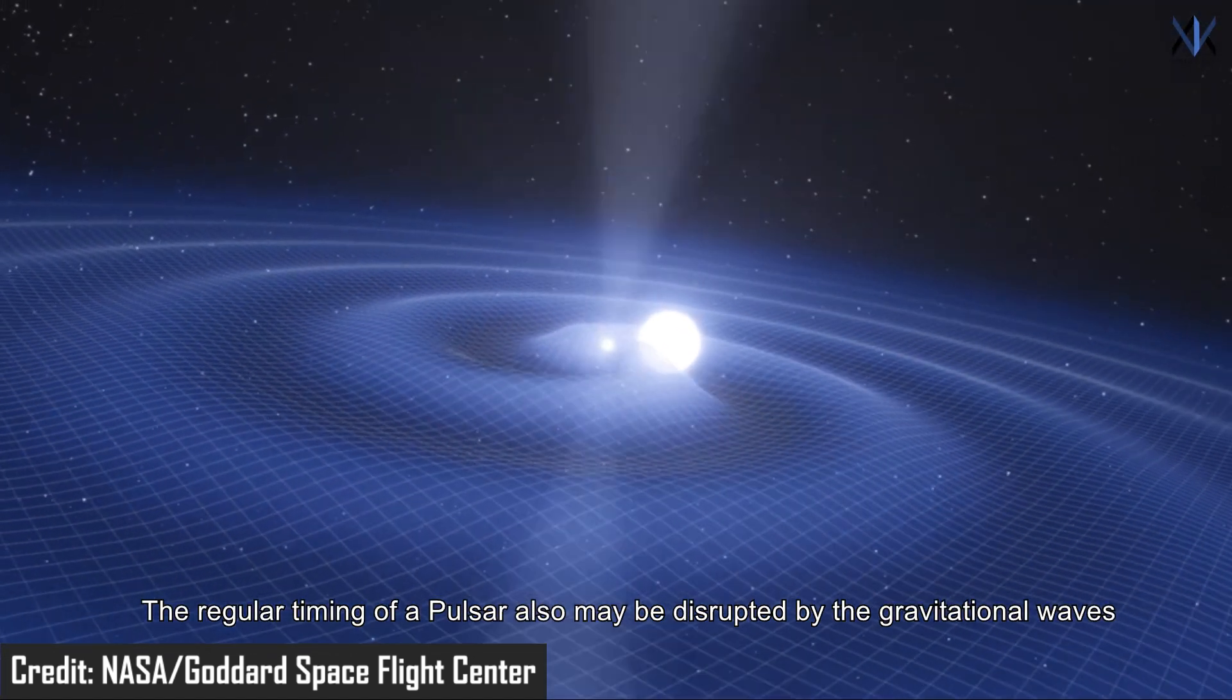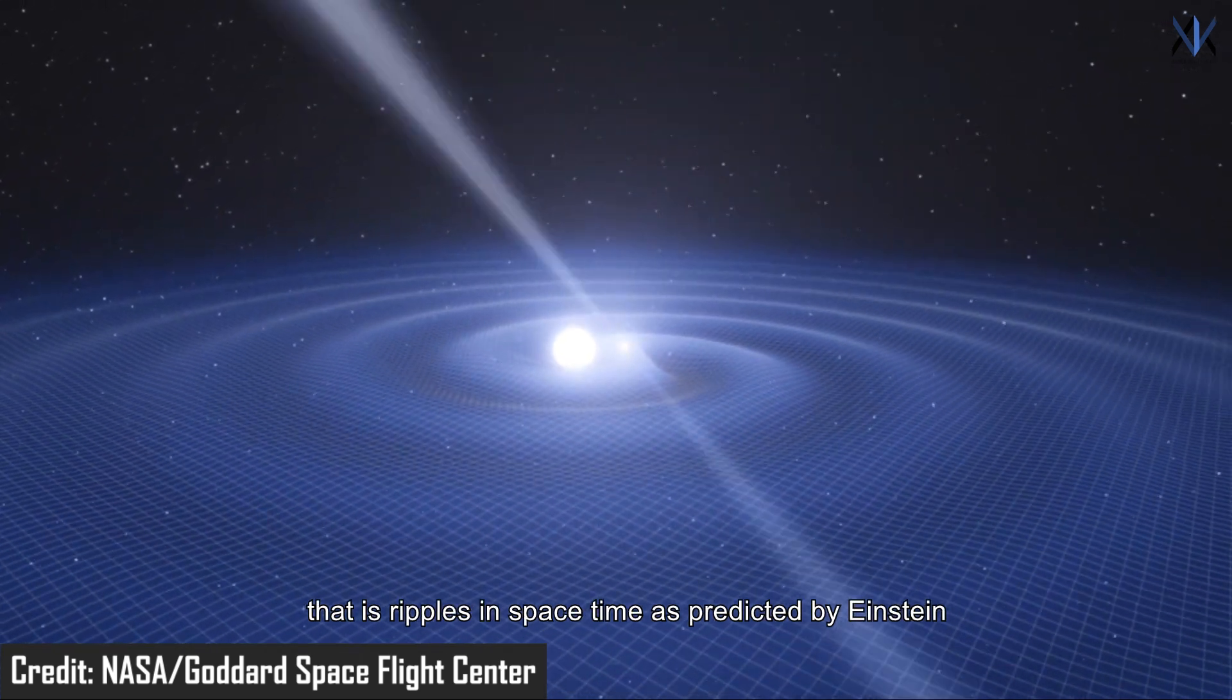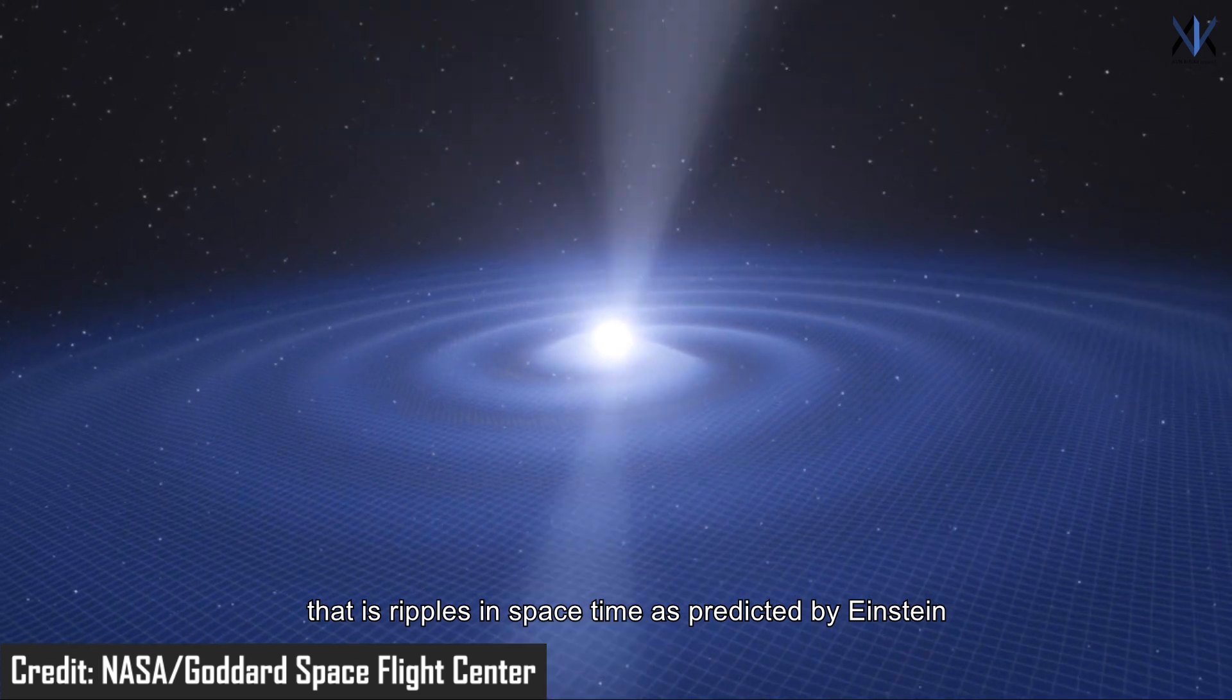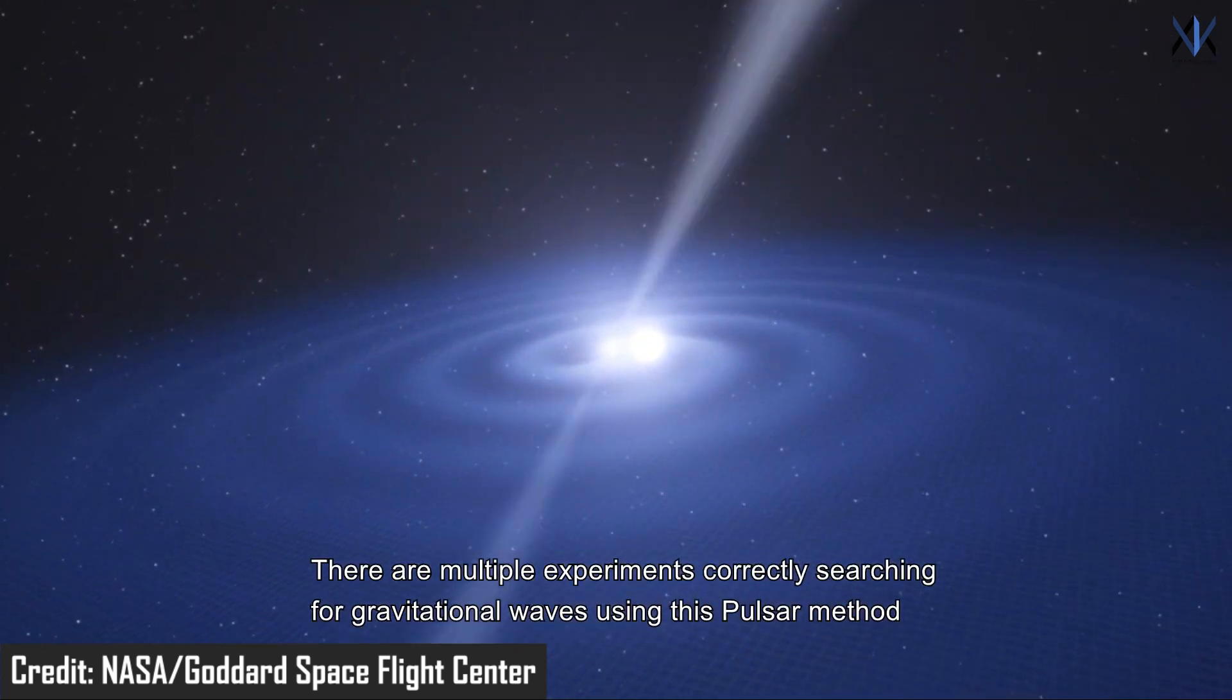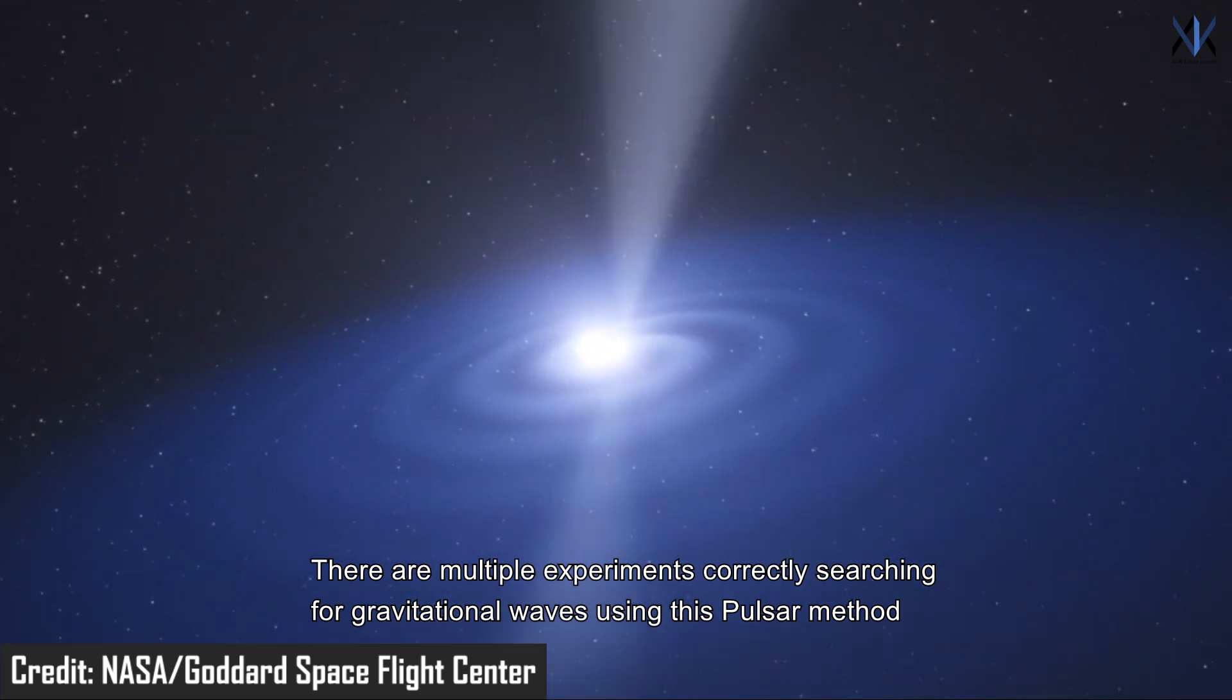The regular timing of a pulsar may also be disrupted by gravitational waves, which are ripples in space-time as predicted by Einstein. There are multiple experiments currently searching for gravitational waves using this pulsar method.